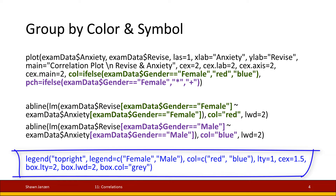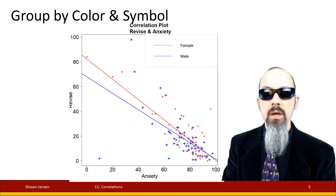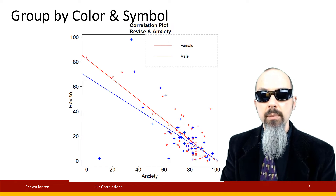I add in a legend function and tell it to put it in the top right corner. With that legend I'm putting in a column to say female and male, followed by colors red and blue. The extra options are just colors and sizing features to control the different aspects of my legend box.